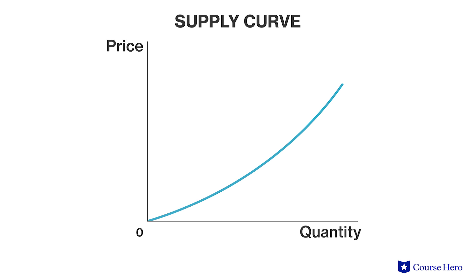Because a firm maximizes profits by producing output at a quantity where the price is equal to the marginal cost, the marginal cost curve is equal to the supply curve. But if the revenue earned at a particular price is less than the average variable cost at that price, the company will shut down production to minimize losses. Therefore, the short-run supply curve and the marginal cost curve are only identical above the minimum point on the average variable cost curve, where price is equal to or greater than average variable cost.